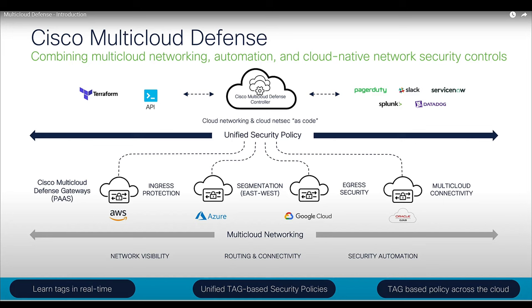When these gateways are deployed, we enable auto-scaling, and by default, auto-healing is also enabled. So if there is a failure of any component, we ensure it is replaced with a new gateway. When a new gateway is added to the infrastructure, all the complexity related to routing and connectivity is automatically handled by the Controller itself. You don't have to worry about complex cloud services like transit gateway, gateway load balancer, VPC attachment, VNET, or peering — those components are automatically handled by Cisco Multi-Cloud Defense Controller.